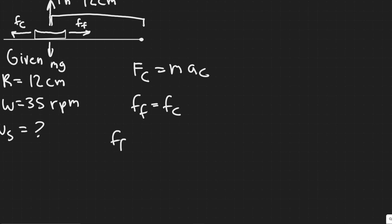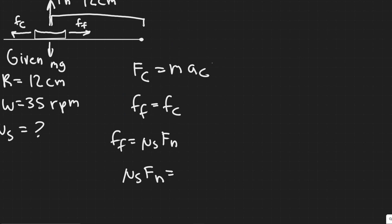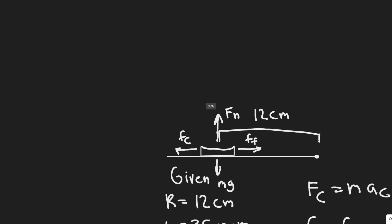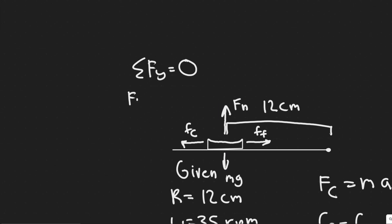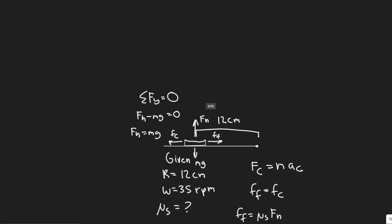The force of friction is μs times F_N. This equals M times the centripetal acceleration A_c. To find the normal force, summing forces in the y-direction: since acceleration is zero vertically, F_N minus Mg equals zero, so F_N equals Mg. Substituting, we get μs times Mg equals M times A_c.